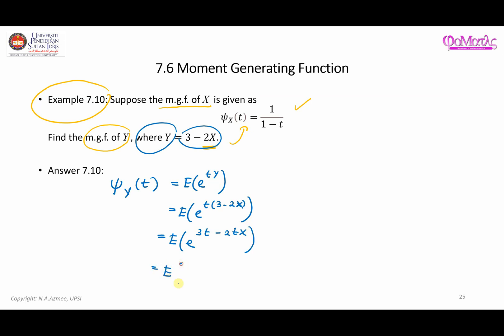Next, we can expand the top part right there. And it becomes e^(3t - 2tX). Next, we can write down in terms of e^3t dot e^(-2tX). So let's recognize that e^3t is a constant, doesn't depend on X. So we can take it out. So it becomes e^3t expected value of e^(-2tX).